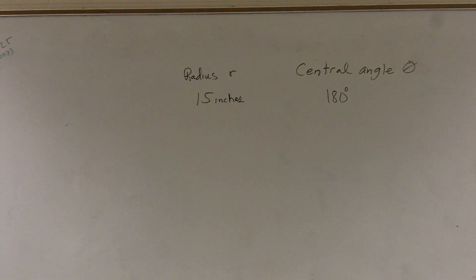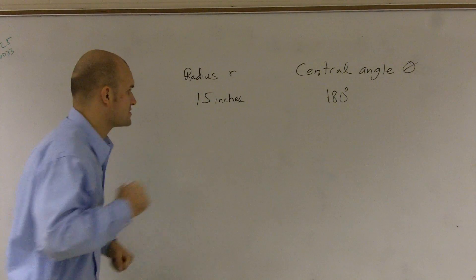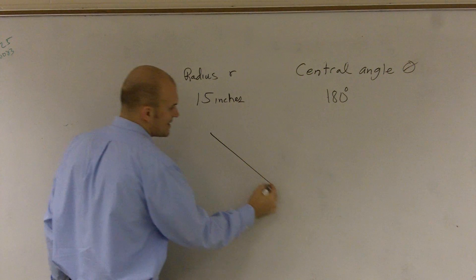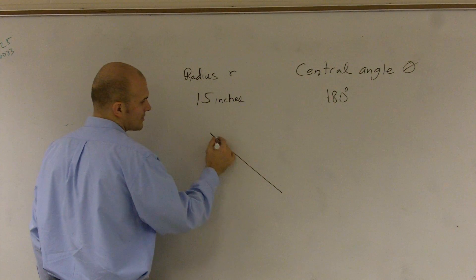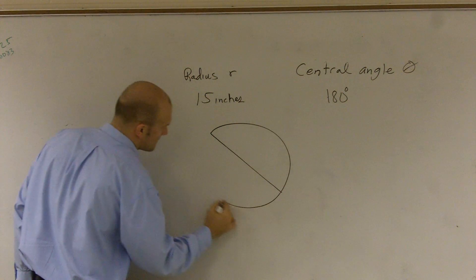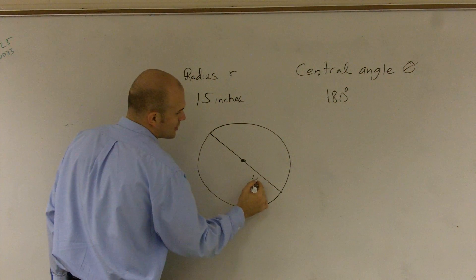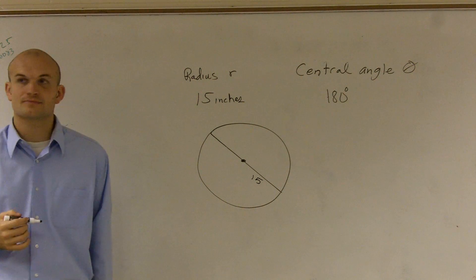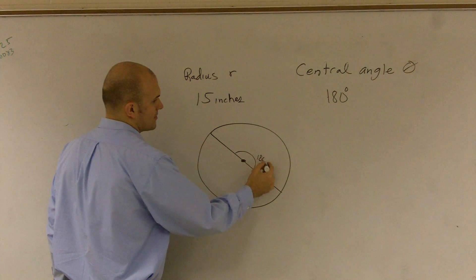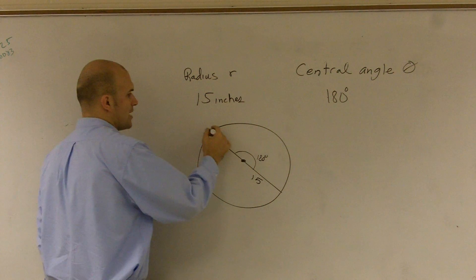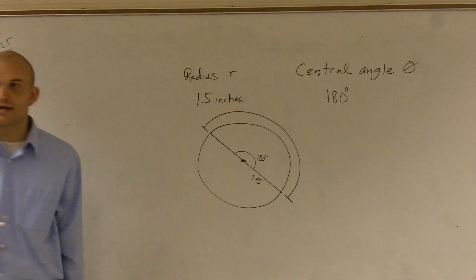All right, what we have is a problem. I want to find out what is the arc length of a circle. The arc length of the circle — the radius is 15 inches, and the angle is 180 degrees. So I want to find out what is the length of my arc.